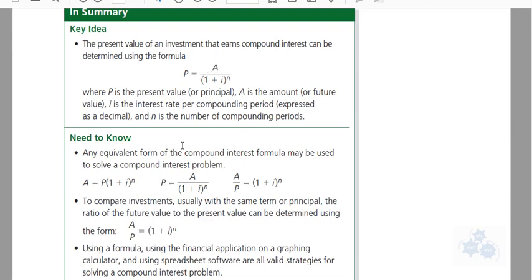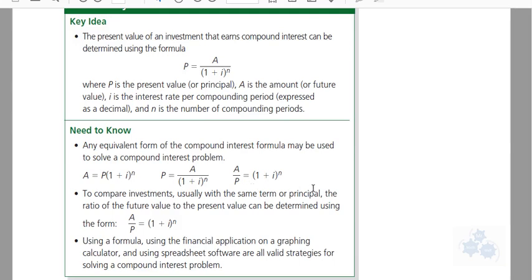But here's some other things that we're going to need to know. If you look at some of the other examples, they ask you for such things as the rate of return. The ratio. There we go. The rate of return we did last section, I guess. So to compare investments, usually the same term or principal, the ratio of future value to present value can be determined using this form. So notice, if you have A over P, this right here would be the ratio of future value to present value.